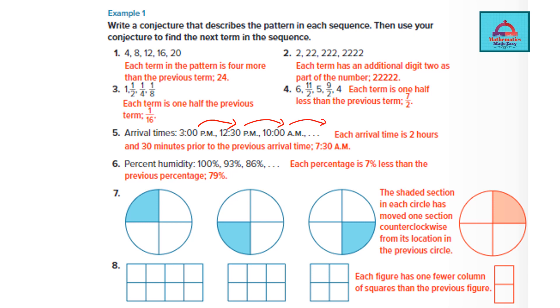So the next time is going to be 7:30 a.m. If you look at percent humidity it is again decreasing by 7 percent. So each percentage is 7% less than the previous. So the next term is going to be 79. We have already discussed the remaining questions.